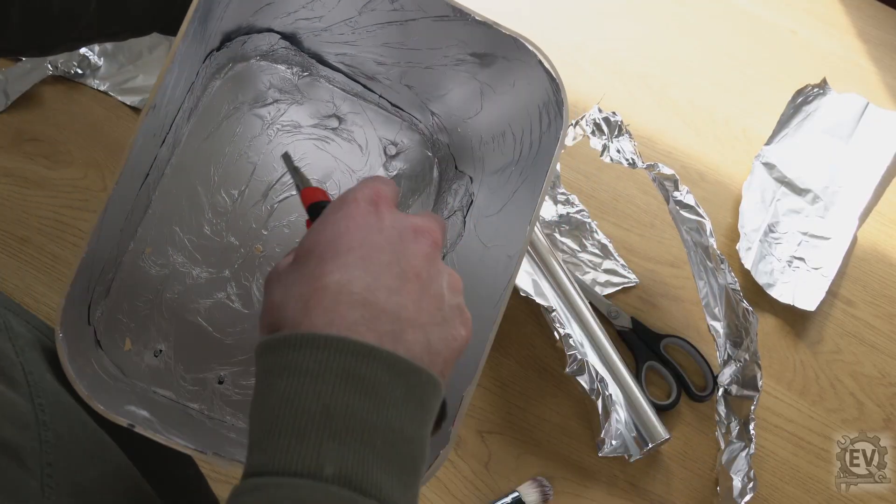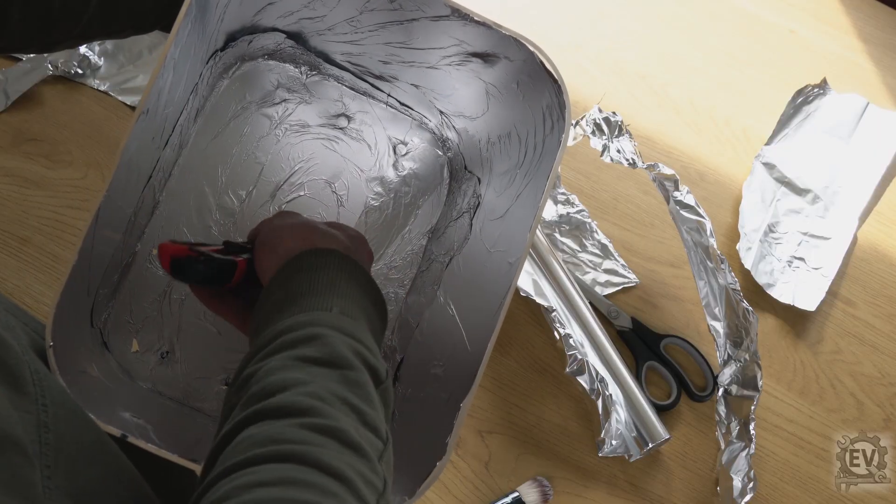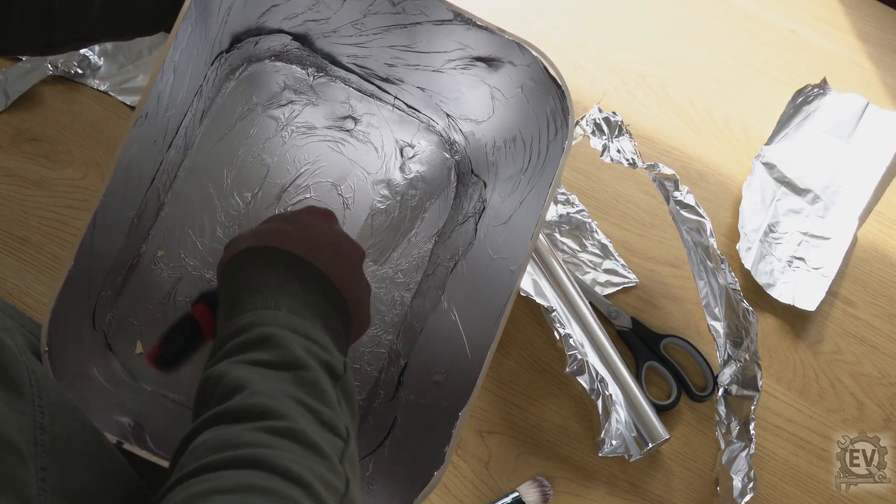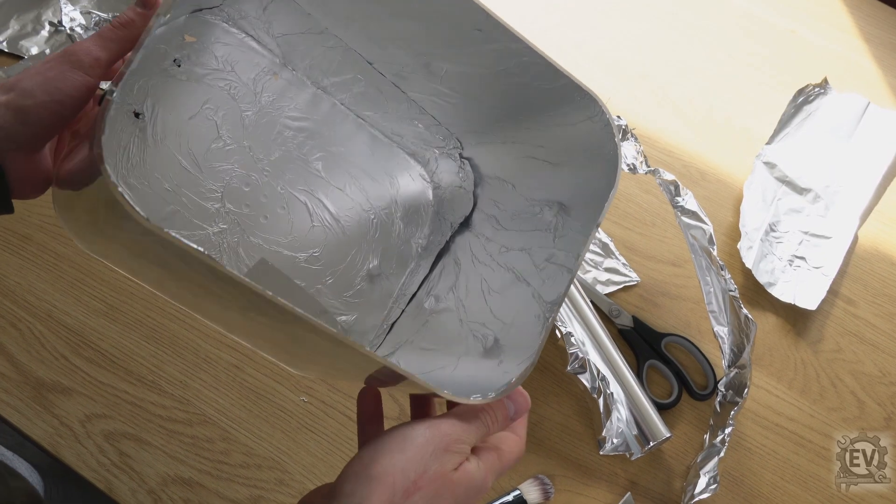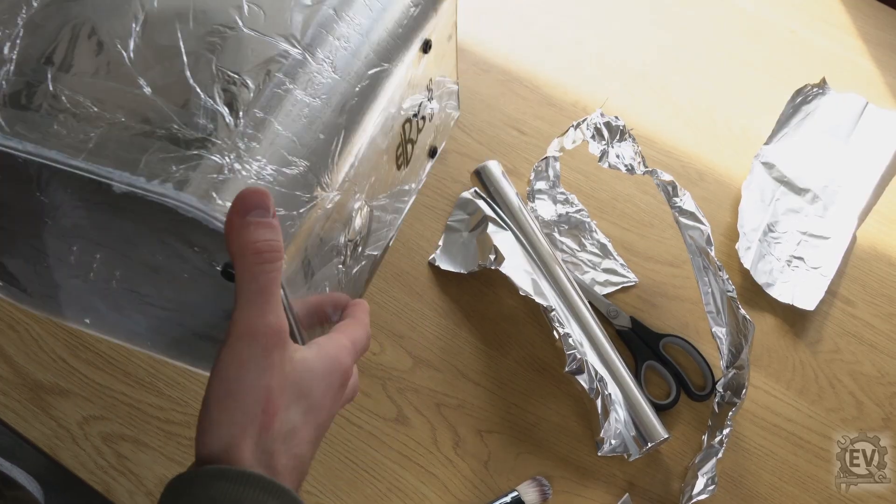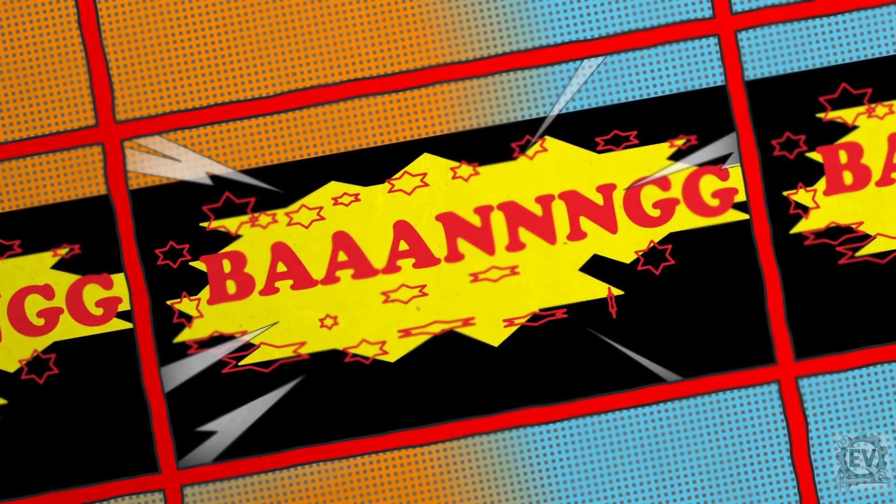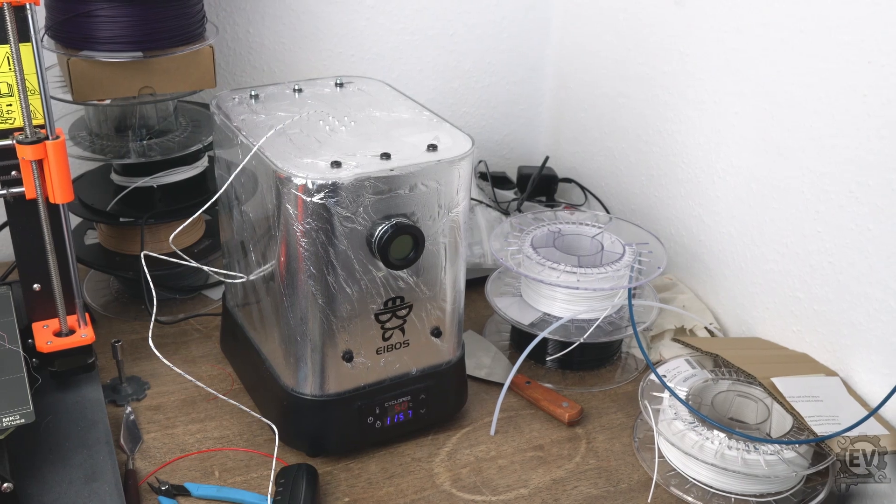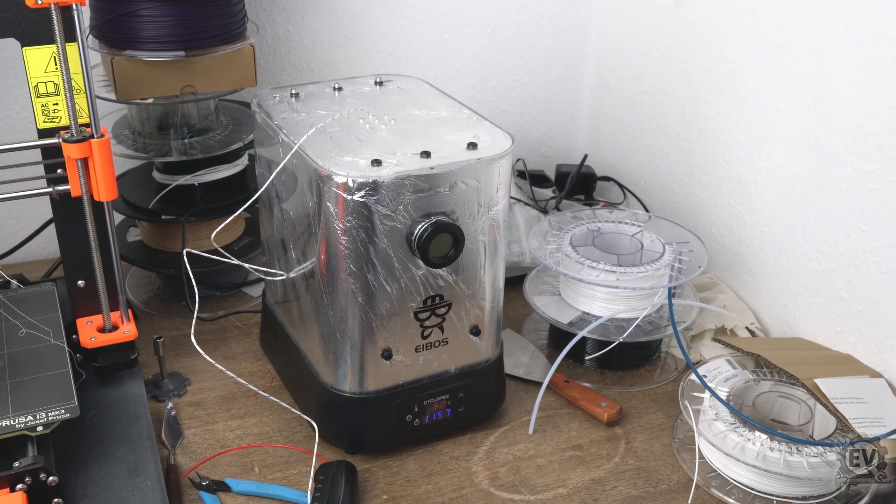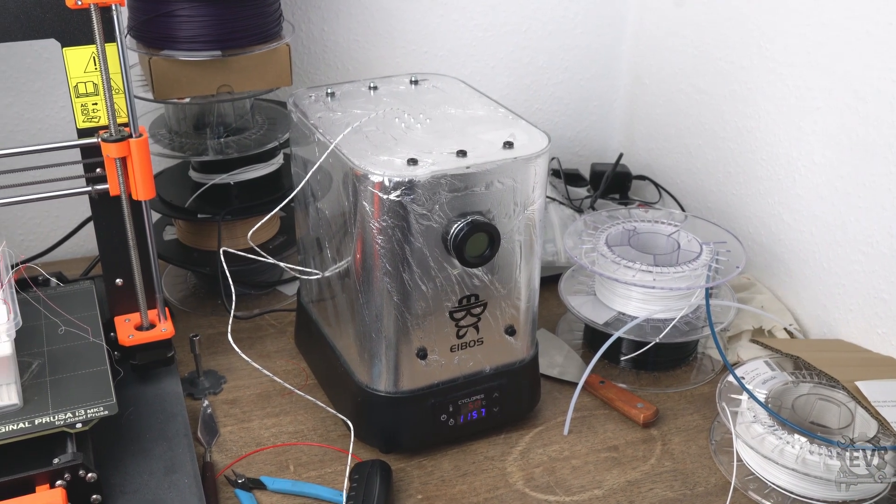Again I recorded the time temperature curve. The room temperature fluctuated by around two degrees but always remained constant. I was about to carry out the test with the aluminium foil when suddenly there was a bang and the fuse blew. Apparently some of my aluminium foil got into the heating element underneath and caused a short circuit.